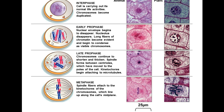Then we go into prophase. During prophase, the chromatin has coiled up and condensed and formed the chromosomes. You notice here and here chromosomes have formed, and the nuclear envelope is dissolving — shown as a broken-down line — and the spindle fibers are forming.